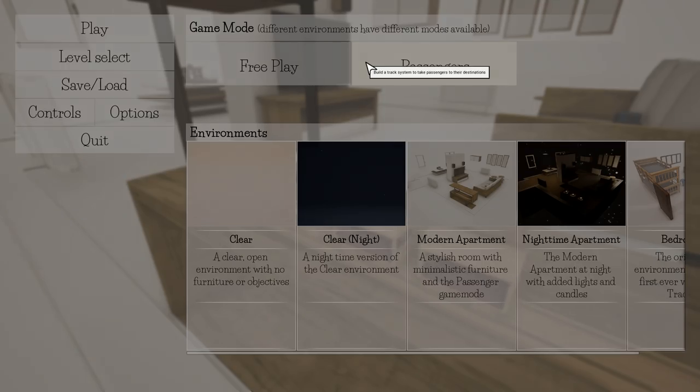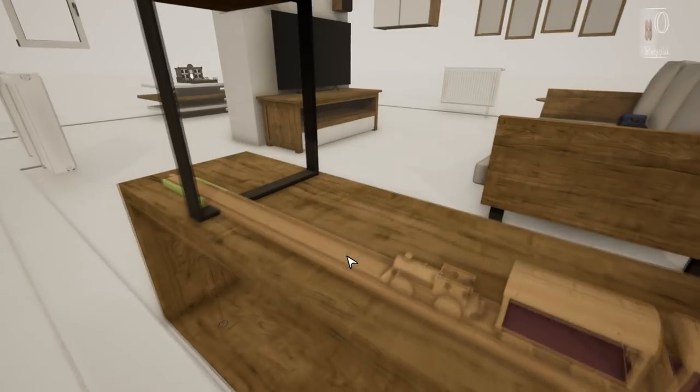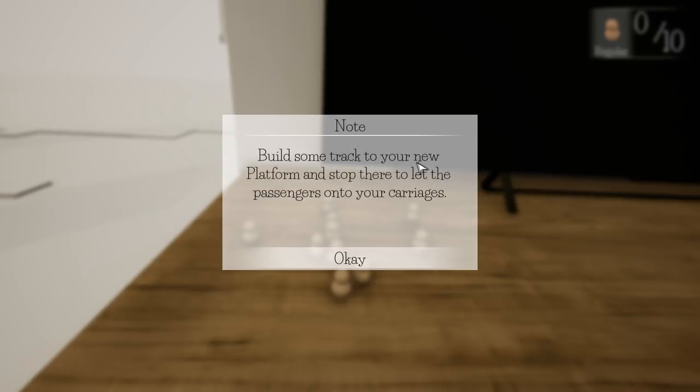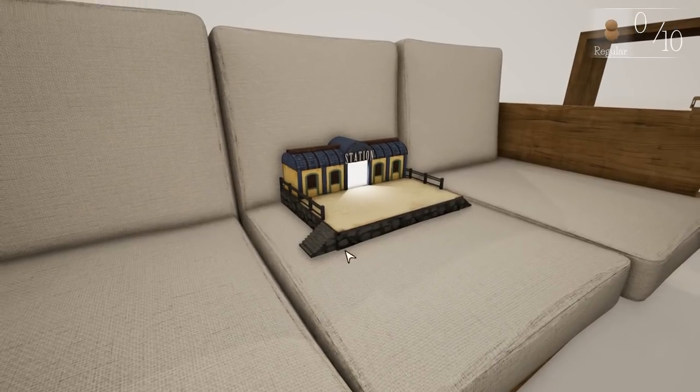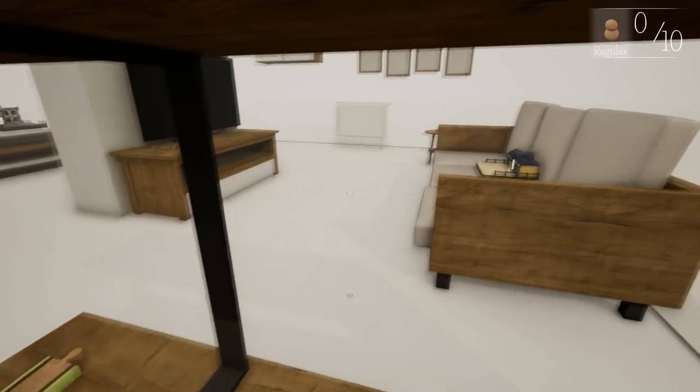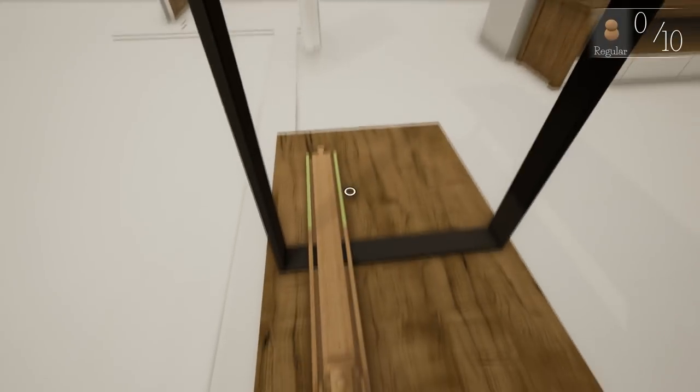Build a track system to take passengers to their destinations. Play. Note, passengers will appear around the room. Open the toy box and drop a platform close to where they are waiting. Press K to skip the tutorial. Alright, little wooden folks over here hanging on out. Build some track to your new platform. And stop there to let the passengers onto your carriages. Very cool that they're actually adding a game mode to this compared to just random playing. We're gonna have to drop the passengers off over here on the couch at the train station. It's very cool here. We can look around the room and see the station. We can see the people over there by our flat screen TV. Another station over there. And then the track right in front of us.